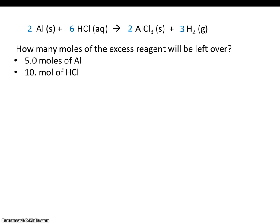In the previous problem, we had two givens, 5 moles of aluminum and 10 moles of HCl. We discovered that HCl was our limiting reactant. Aluminum was our reactant that was in excess.